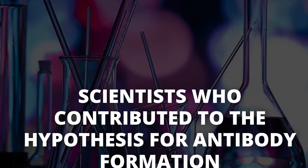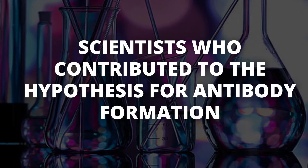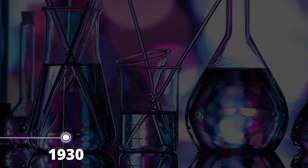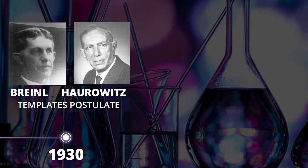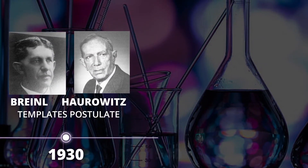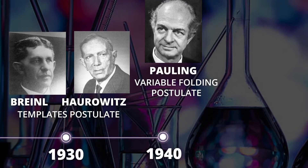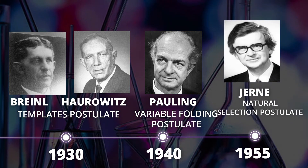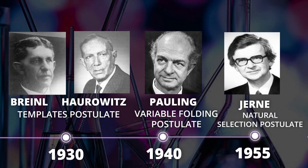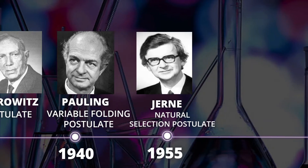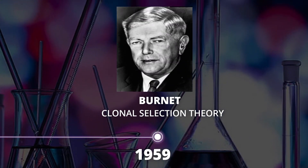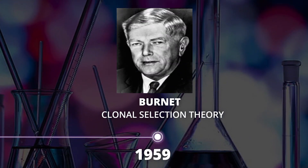Several scientists contributed to hypotheses for antibody formation. In 1930, Breinl and Haurowitz formulated the templates postulate. In 1940, Linus Pauling formulated the variable folding postulate. In 1955, Niels Jerne formulated the natural selection postulate. And in 1959, Frank Macfarlane Burnet formulated the clonal selection theory.